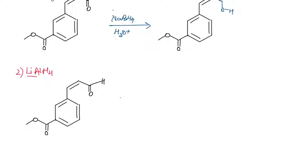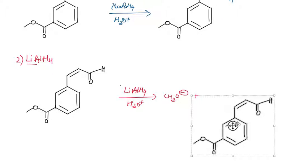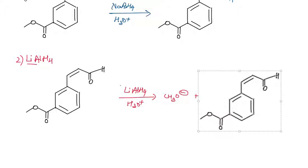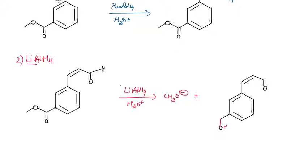When this compound is reacted with LiAlH4 and quick hydrolysis, we are first left with a CH3O minus alkoxide anion and our main product. The aldehyde groups on both ends of the compound get further reduced, and we are left with an alcoholic group on both sides of the compound. This is one product — one possibility.